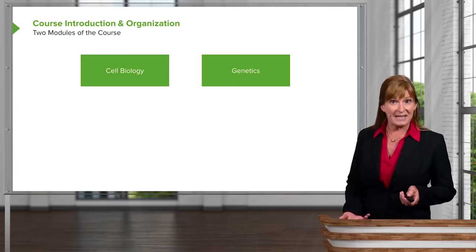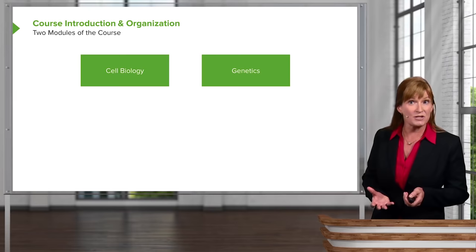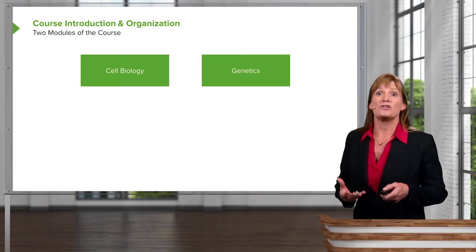During the cell biology module, we'll be looking at the chemical building blocks of life, starting at the very base — chemistry, atoms, molecules — and then we'll put all these atoms and molecules together to produce the cell. We're going to look at cell structures and functions, and then how cells divide and reproduce.